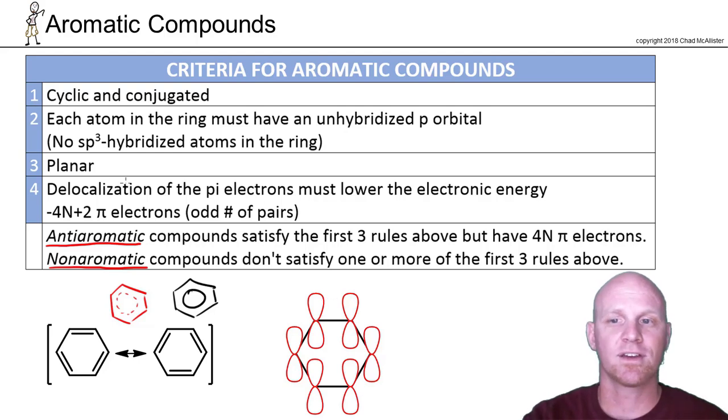So benzene is going to be our classic example here. And benzene, first and foremost, is cyclic and it is a conjugated system. That's easy to see.